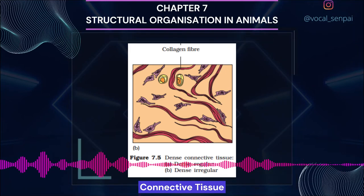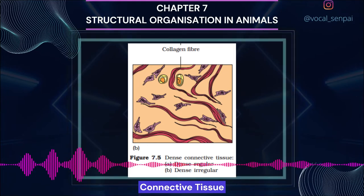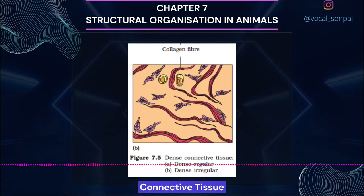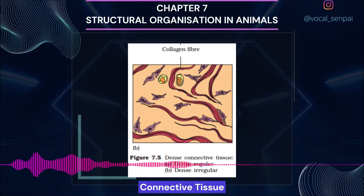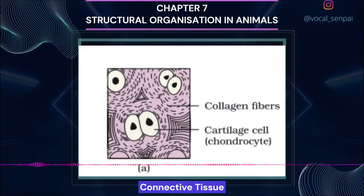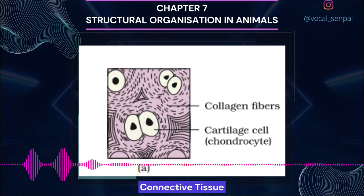Fibers and fibroblasts are compactly packed in dense connective tissues. Orientation of fibers shows regular or irregular patterns, called dense regular and dense irregular tissues. In dense regular connective tissue, collagen fibers are present in rows between many parallel bundles of fibers. Tendons, which attach skeletal muscles to bones, and ligaments, which attach one bone to another, are examples. Dense irregular connective tissue has fibroblasts and many fibers, mostly collagen, that are oriented differently (figure 7.5), and is present in the skin. Cartilage, bones and blood are various types of specialized connective tissues.